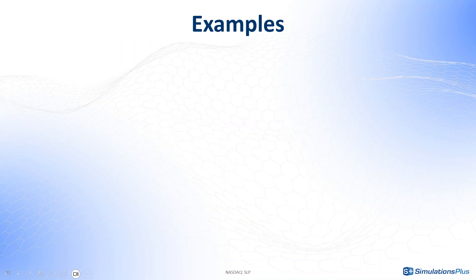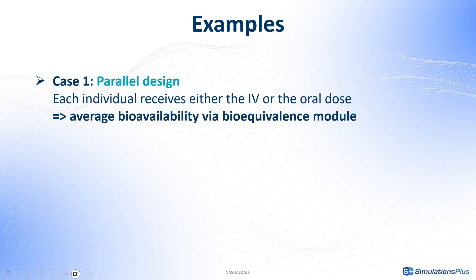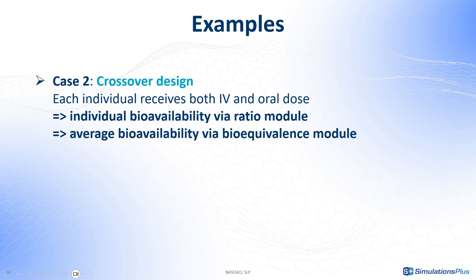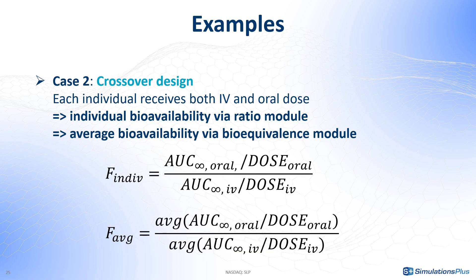To show how to calculate the bioavailability in PIC-Analyx, we will distinguish two cases. In the first case, each individual has received only one of the two formulations in a parallel design. In that case, we can calculate only an average bioavailability by doing the ratio of the average AUC to infinity for oral over the average AUC to infinity for IV, using the bioequivalence module, which will also give a confidence interval. In the second case, each individual has received both oral and IV formulations in a crossover design. Then the bioavailability can be calculated for each individual using the ratio module, and we can also calculate an average bioavailability and confidence interval using the BE module.